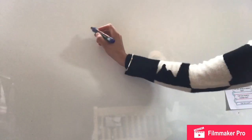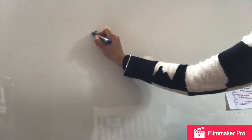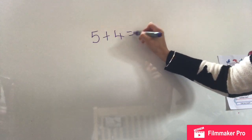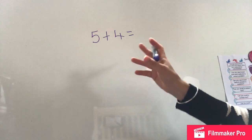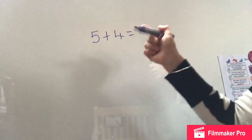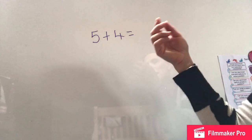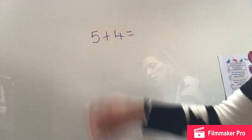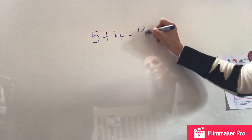So here's my whiteboard. My first number sentence is a really simple one — it's a one-digit one. So I'm going to start with five add four equals. I've got to work that out — I'm just going to do that in my head quickly. Five, six, seven, eight, nine. So the answer is nine.